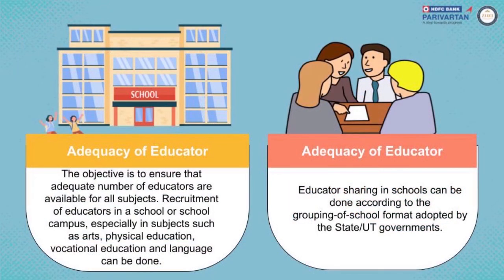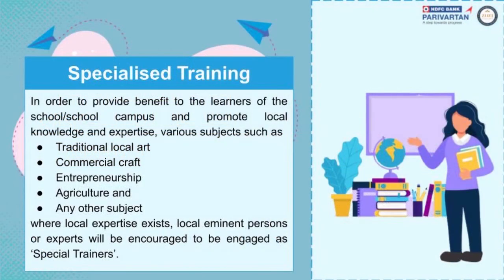The objective is to ensure adequate numbers of educators are available for all subjects. Recruitment of educators in a school or school campus — especially in subjects such as art, physical education, vocational education, and language — can be done through school sharing arrangements according to the grouping format adopted by state or union territory governments. Specialized training will be provided to promote local knowledge and expertise. For subjects such as traditional local art, commercial craft, entrepreneurship, and agriculture, local eminent persons or experts will be encouraged to be engaged as special trainers.